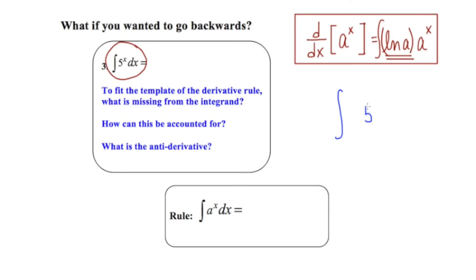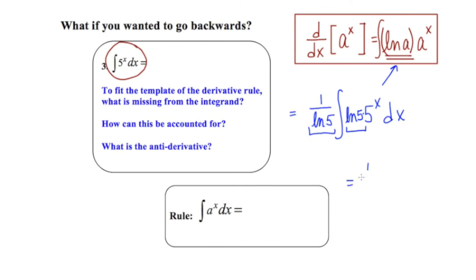Our original problem, as stated, is the integral of 5 to the x dx. To make this integrand form-fit with the rule, it's missing the ln5. So I'm going to put that in. But because I've inserted a constant, I need to counter that by multiplying by its reciprocal. The net effect of including ln5 and its reciprocal is like multiplying by 1 — it's like I haven't changed the problem at all, but it makes it form-fitting to our rule. So we complete the antiderivative as 1 over ln5 times 5 to the x, plus c, and we can write this as a single fraction.